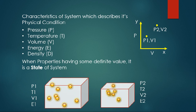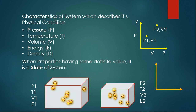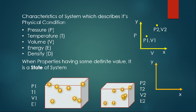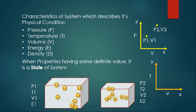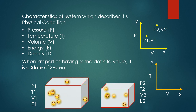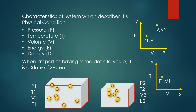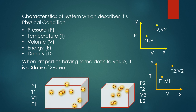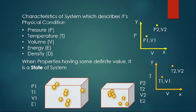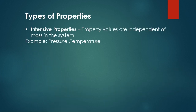We can also draw other graphs like PT and VT diagrams. Consider a TV diagram: to specifically mention a state we need the temperature and volume values. When temperature is T1 and volume is V1 the state is one point, and when temperature is T2 and volume is V2 the state is another point.